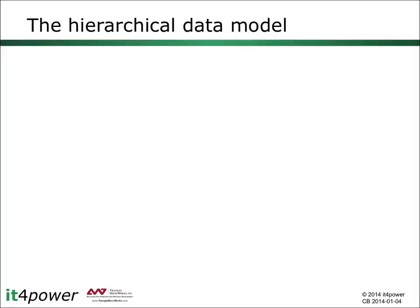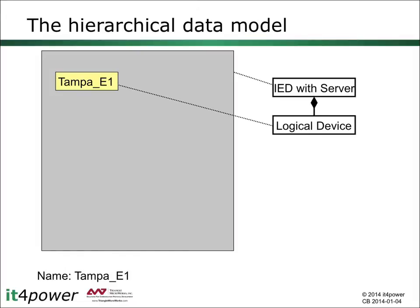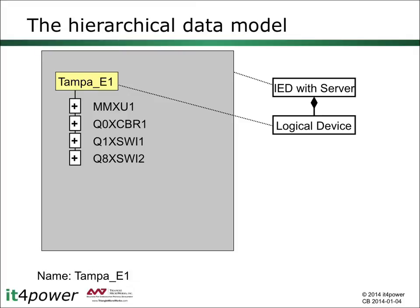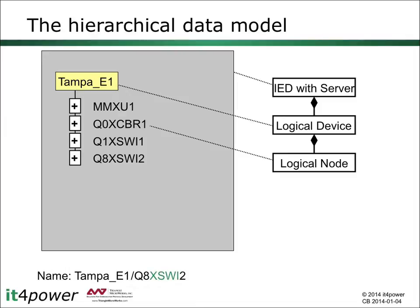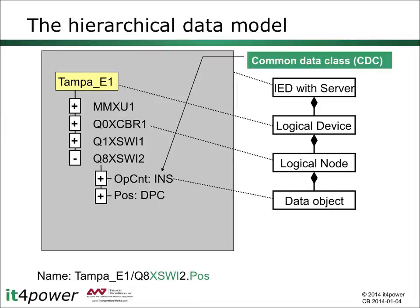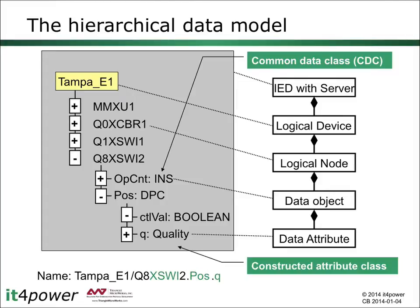These are elements in a hierarchical data model found within an IEC 61850 server of an IED. The top level is the logical device, which is a collection of multiple logical nodes. The logical nodes contain data objects, and the structure of a data object is defined by the common data class. For example, INS is a common data class for integer status information. The common data class defines what data attributes are available for a data object. The data attributes are the leaves of the hierarchy.